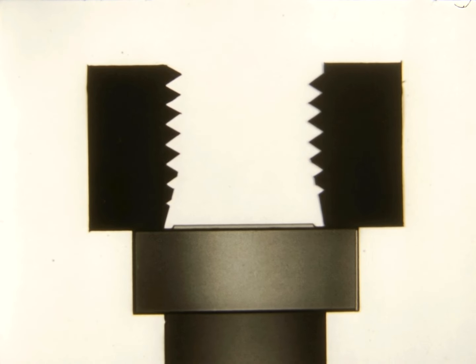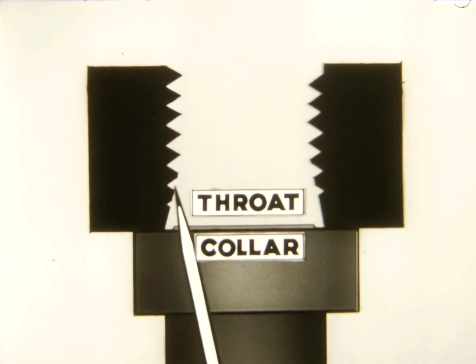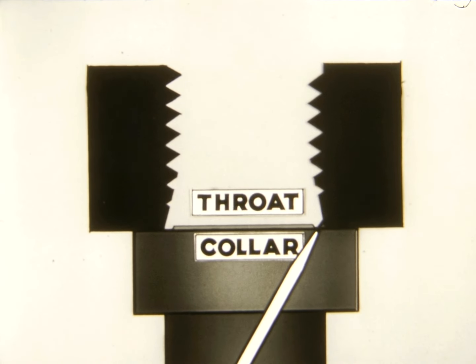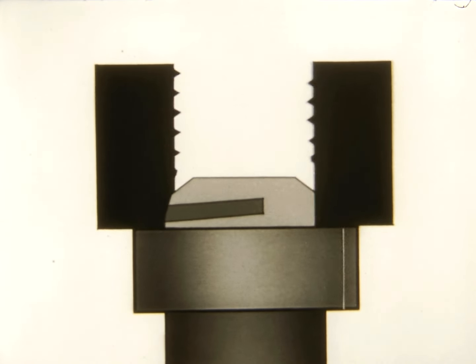Here in animation, we see the action of a die in cutting a thread. The collar acts as a guide to ensure the squareness of the die to the work. The tapered portion, or the throat, starts a shallow cut, gradually increasing in depth as the work progresses.